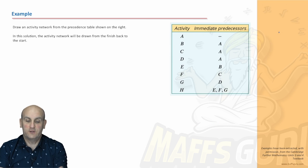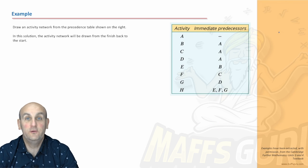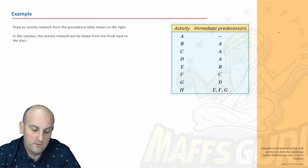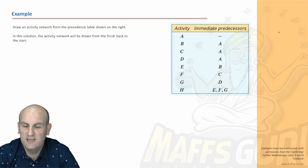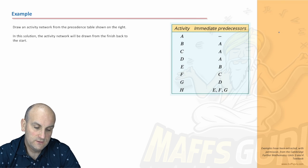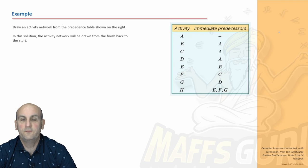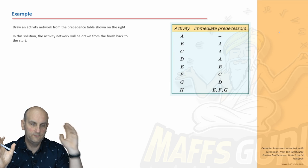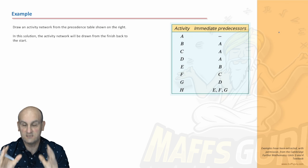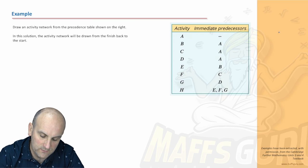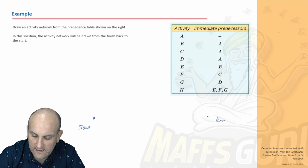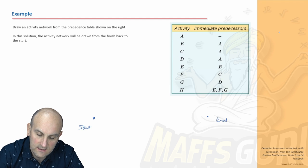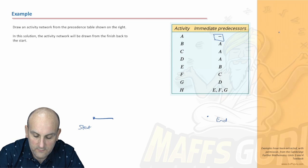Let's have a look at another example — thank you Cambridge for the question. 'Draw an activity network from the precedence table shown.' The solution says to draw the network from finish back to start, but I'm starting from both the beginning and the end and trying to meet in the middle — trust me it makes life so much easier. So: dot for start, dot for end. Activity A is the only one with no predecessor, so there's a line with an arrow for activity A.